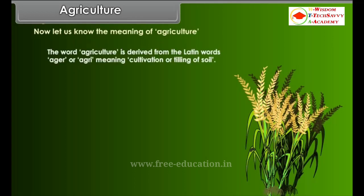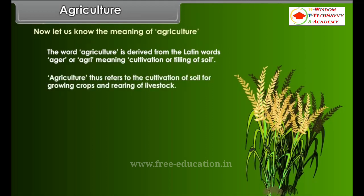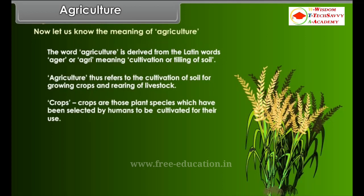The word agriculture is derived from the Latin words aga or agri, meaning cultivation or tilling of soil. Agriculture thus refers to the cultivation of soil for growing crops and rearing of livestock. Crops are those plant species which have been selected by humans to be cultivated for their use — for example, wheat, rice, maize, etc.